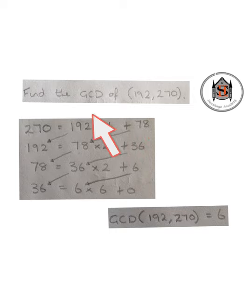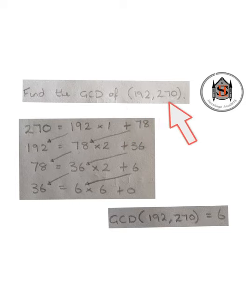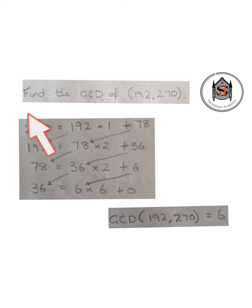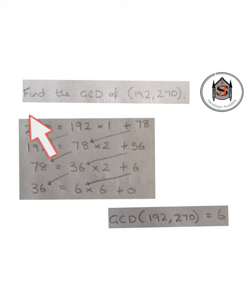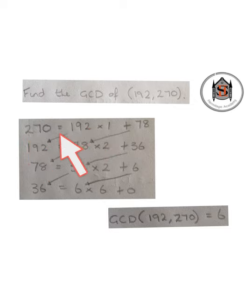In this question we want to find the greatest common divisor between 192 and 270. Using the Euclidean algorithm we want to start with the highest number first, which is 270 in this case, and work out how many times the smaller number goes into 270.